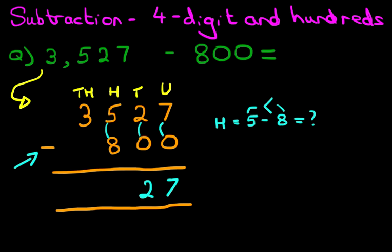What we're going to do is we're going to take one away from the thousands, the three. So you see the three over here? We're going to take one from here and add it to the five. How do we do that?